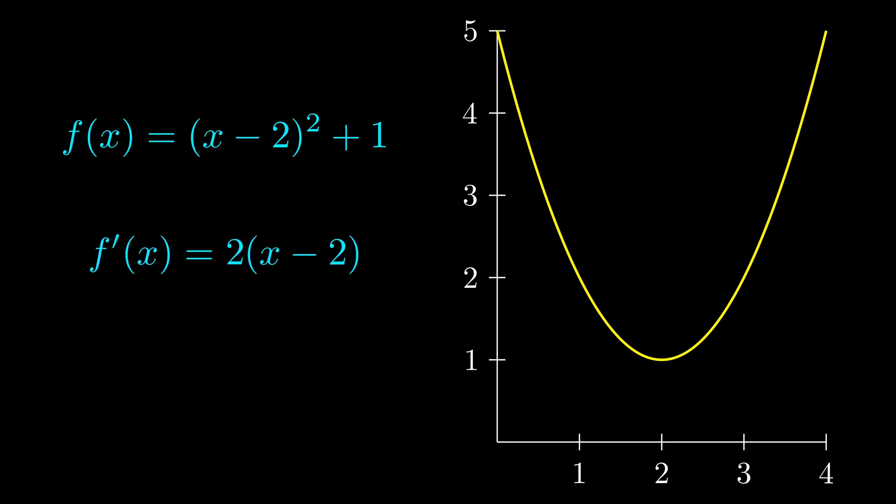Let's look at an example in one dimension. This parabola, f of x equals x minus 2 squared plus 1, is bowl-shaped, so it's convex. Because it's convex, the minimum occurs where the derivative, or the slope of the tangent line, is zero. We can work out the math and see that this minimum point occurs at x equals 2.